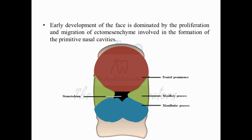In the development of the face, we have three different prominences and processes represented in this image. The topmost process is known as the frontal prominence, whereas you have two other paired prominences known as the maxillary process and the mandibular process — two maxillary processes and two mandibular processes. In between these processes, the black hollow area refers to the primitive oral cavity, or the region where the future oral cavity will be formed, known as the stomodium.